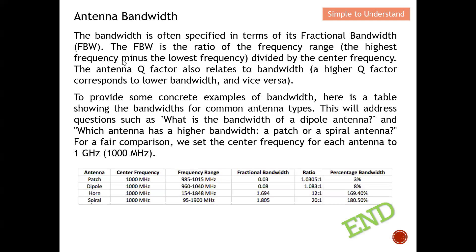To summarize: bandwidth is often specified in terms of fractional bandwidth. The fractional bandwidth (FBW) is the ratio of the frequency range — highest minus lowest — divided by the center frequency. The antenna Q factor also relates to bandwidth with an inverse proportional relationship: high Q means low bandwidth, and low Q means high bandwidth.